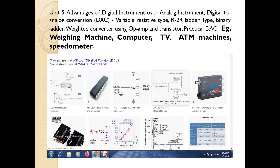The next unit is about digital instruments over analog instruments — what are analog instruments and what are digital instruments. We will discuss the advantages of digital instruments over analog instruments. Then we will study D2A converter (digital to analog) and A2D converter (analog to digital). Examples of A2D converters include weighing machines, computers, televisions, ATM machines, and speedometers.